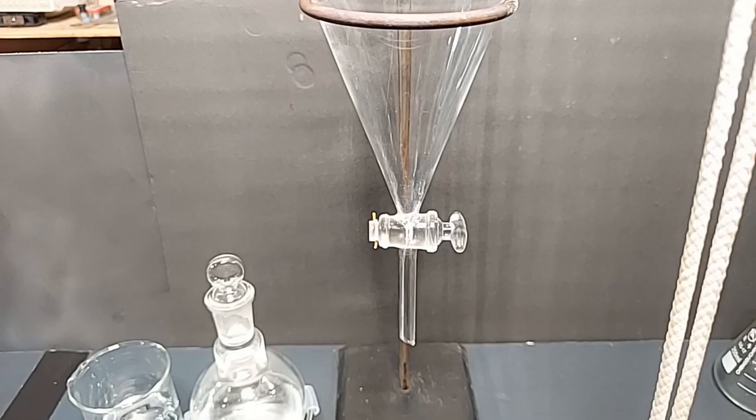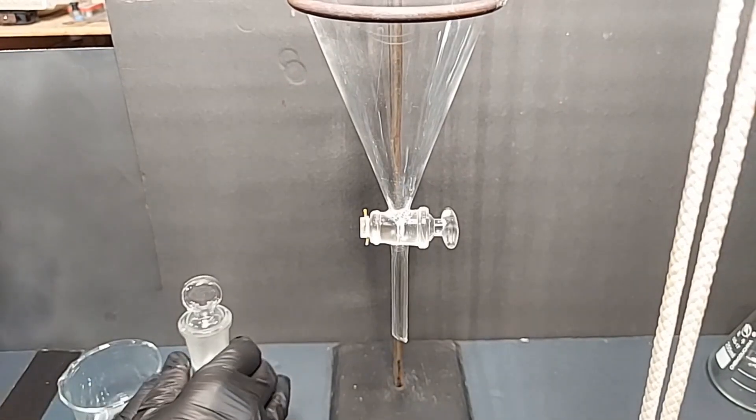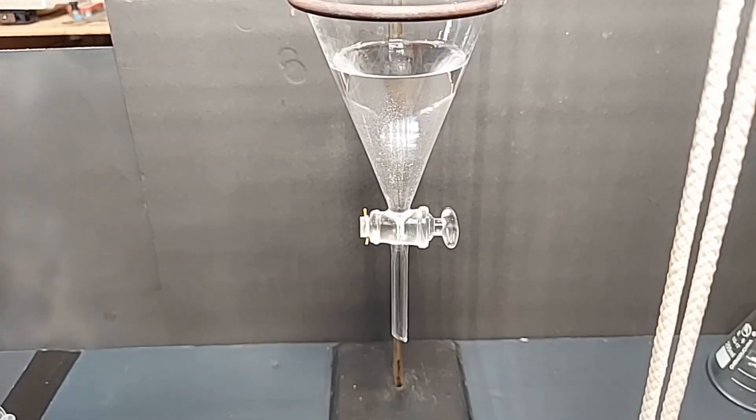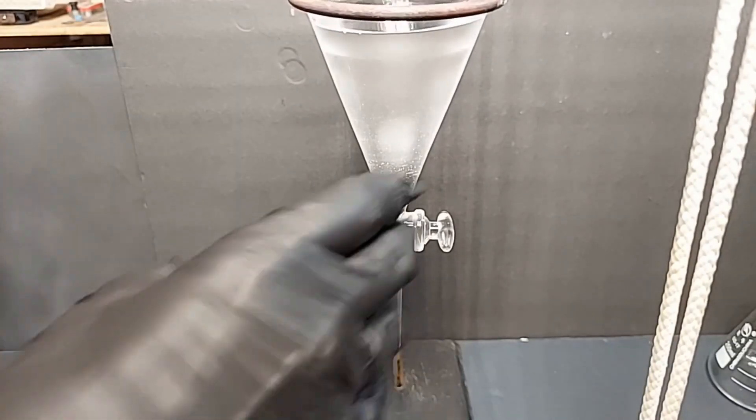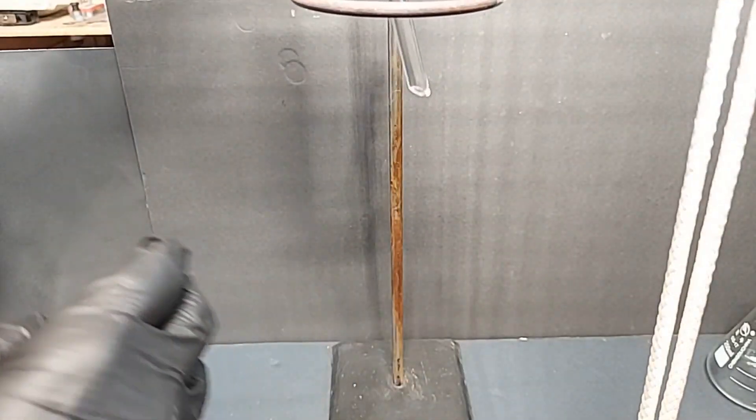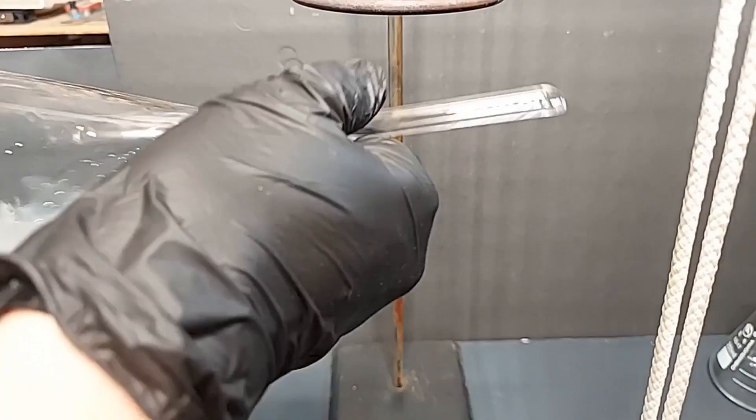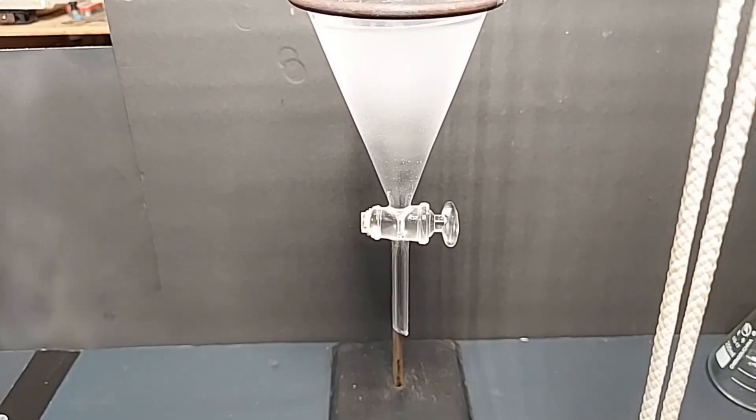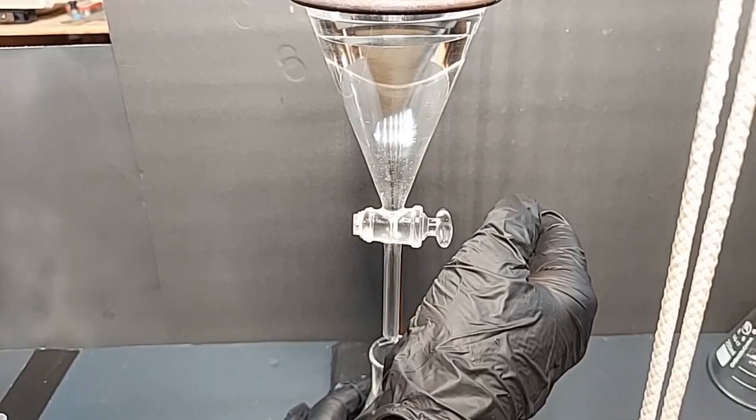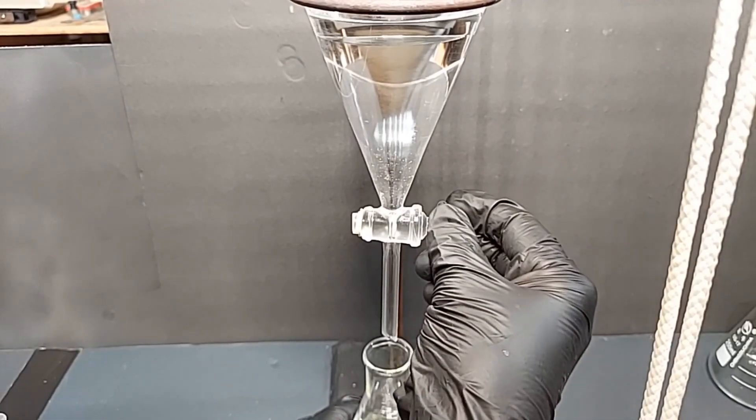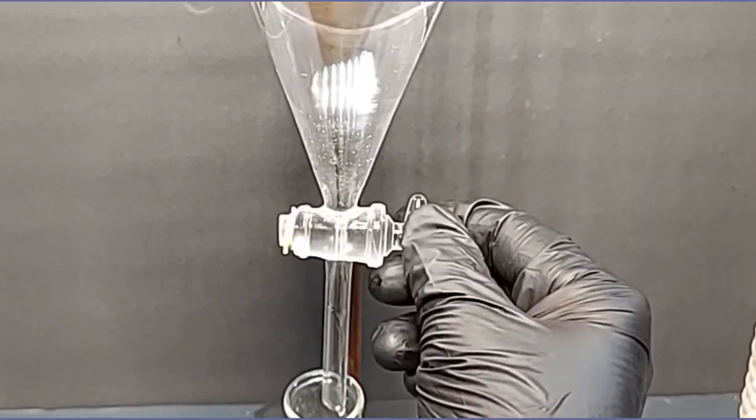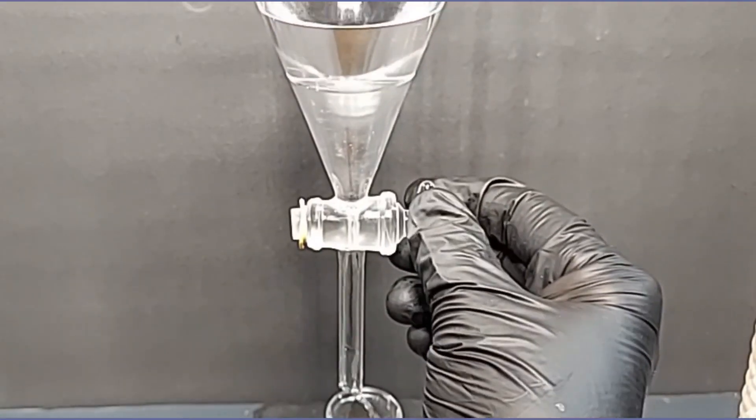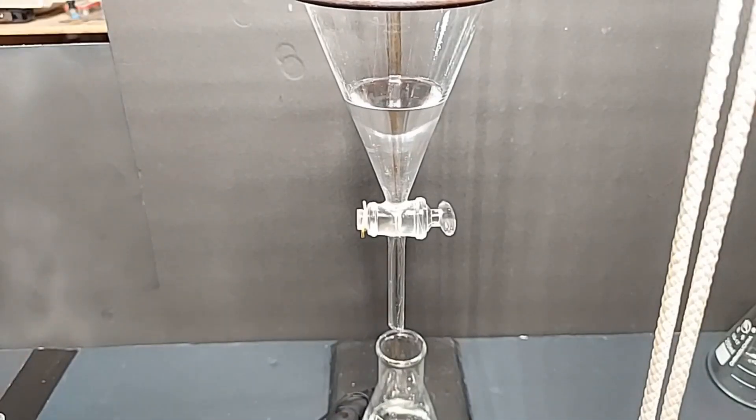I'll first add the ethyl acetate so we can get started. Just adding the ethyl acetate. Now adding the cold water. The aqueous layer is forming on the bottom, and I'll drain that next. Removing the aqueous layer along with some of the sulfuric acid, some of the acetic acid, and some of the ethanol.